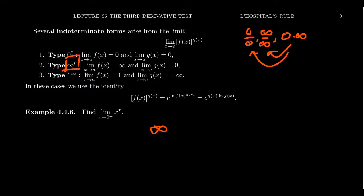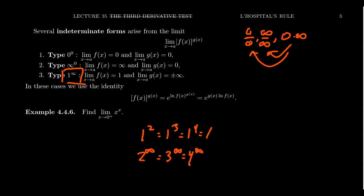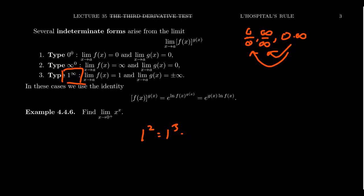This last one — 1 to the infinity — is a lot harder for students to believe, but it's the same conflict as before. Powers of 1, like 1 squared, 1 cubed, 1 to the 4th, are always equal to 1. But things taken to the infinite power, like 2 to the infinity or 3 to the infinity, are typically infinite. So who's more powerful — the base of 1 or the exponent of infinity? It could be anything, so we need to investigate these more carefully.